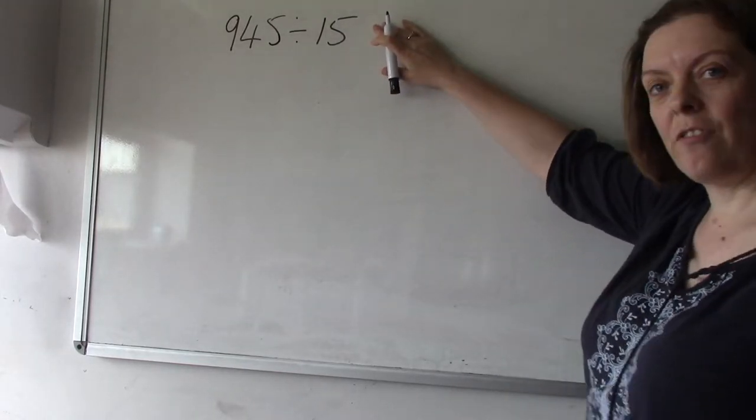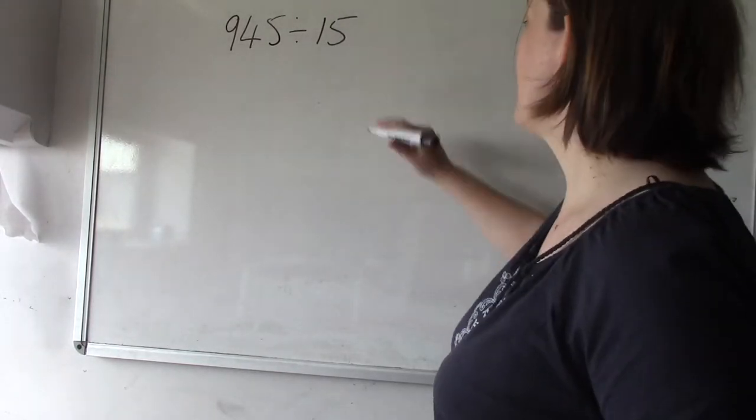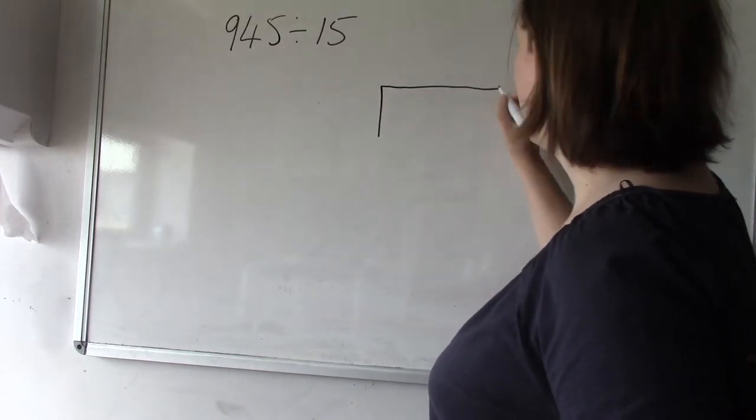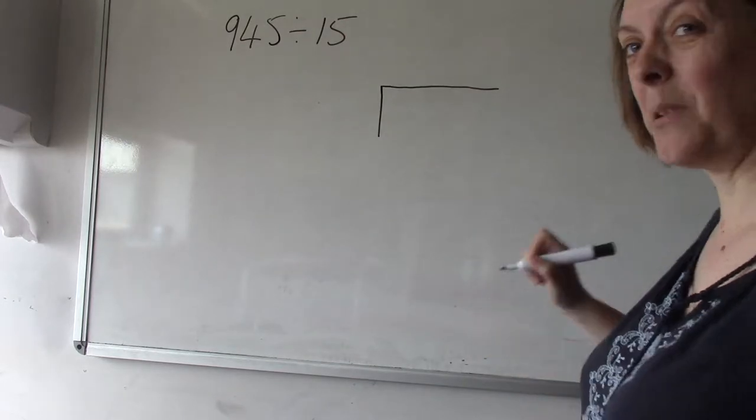The sum we're going to look at is 945 divided by 15, and to work this out we're going to use what's called the bus stop method. It's called the bus stop method because it kind of looks like a bus stop.